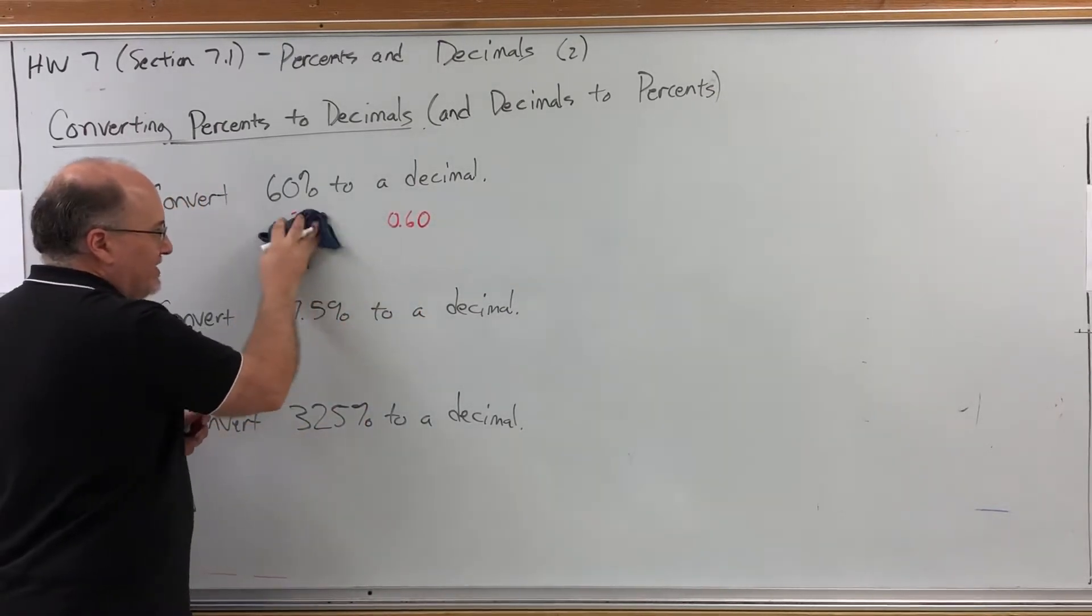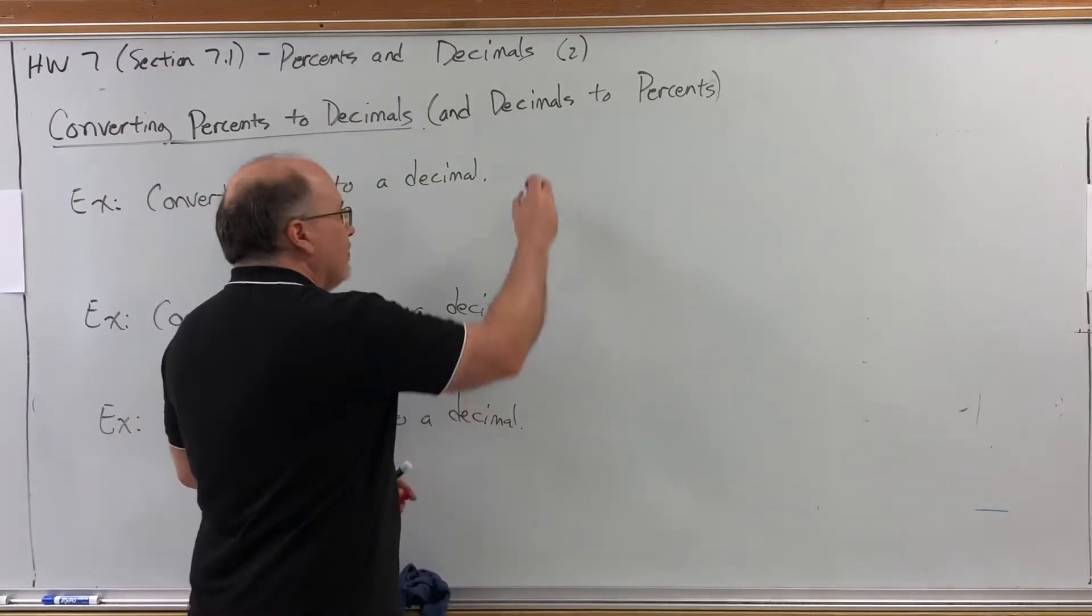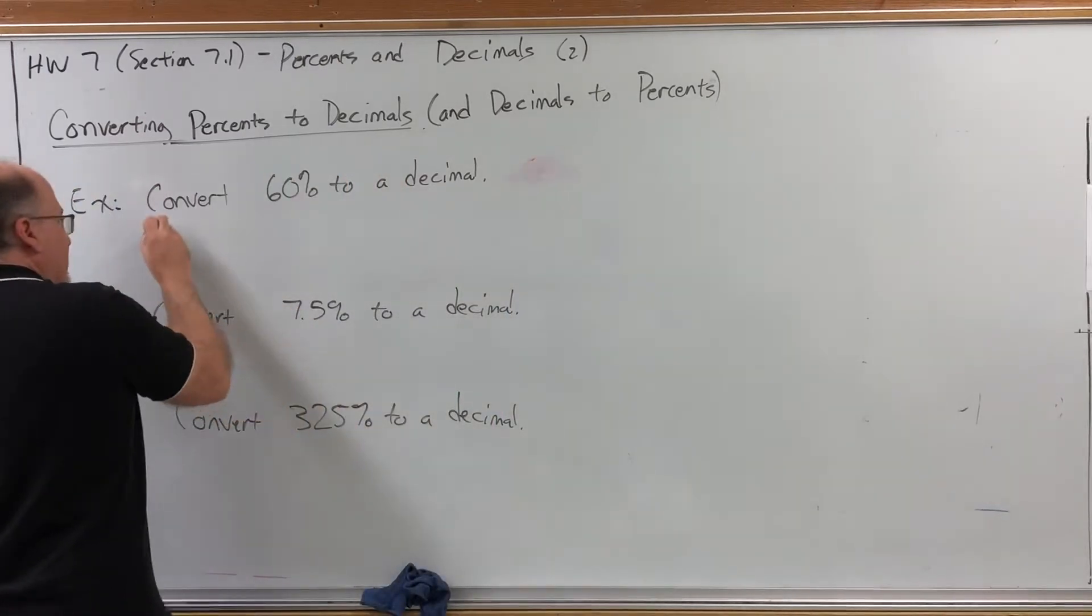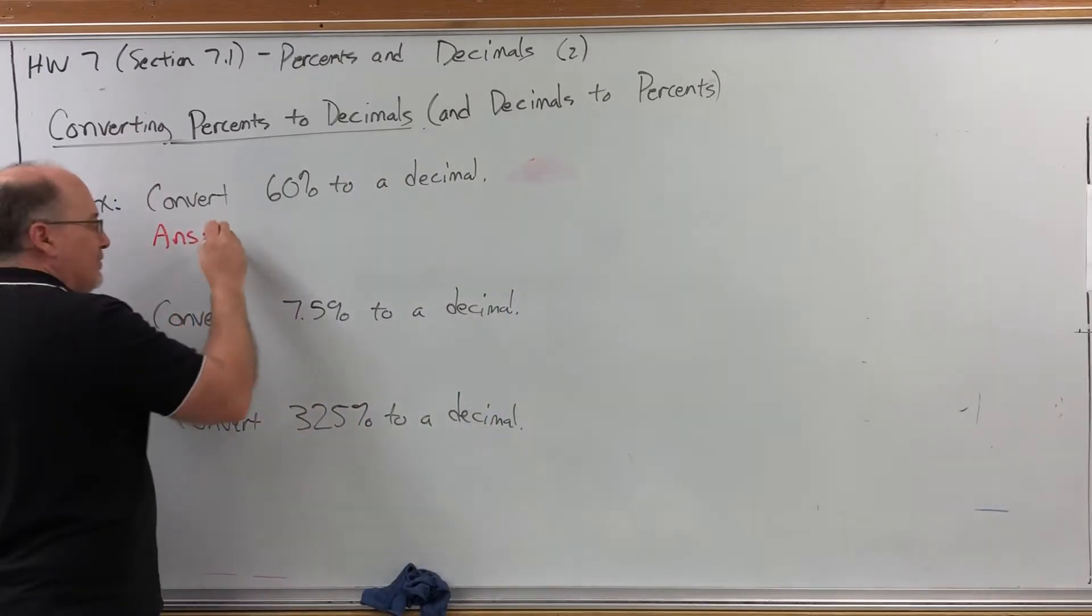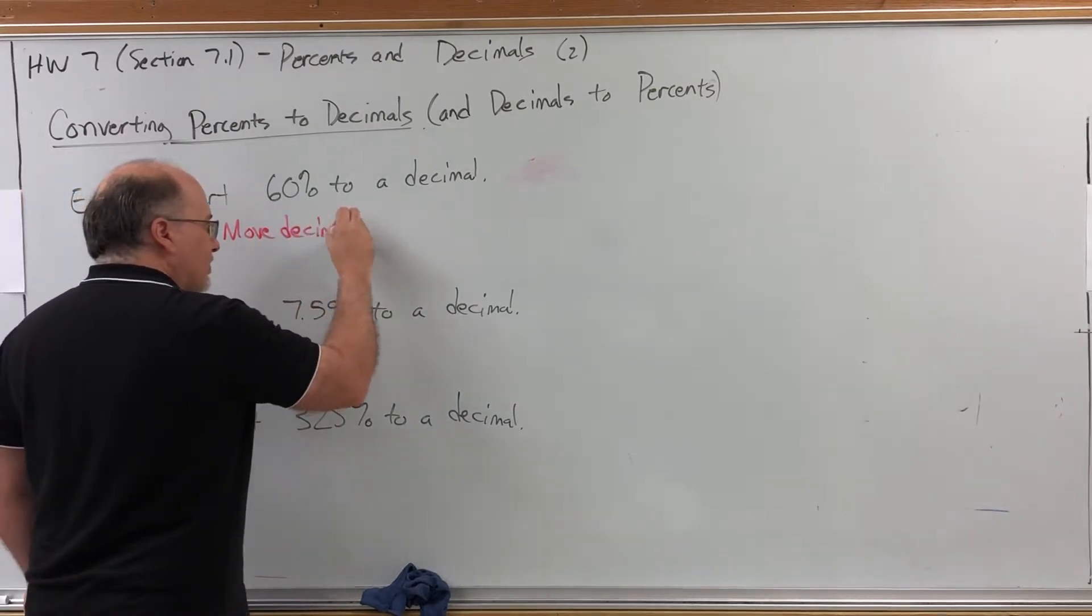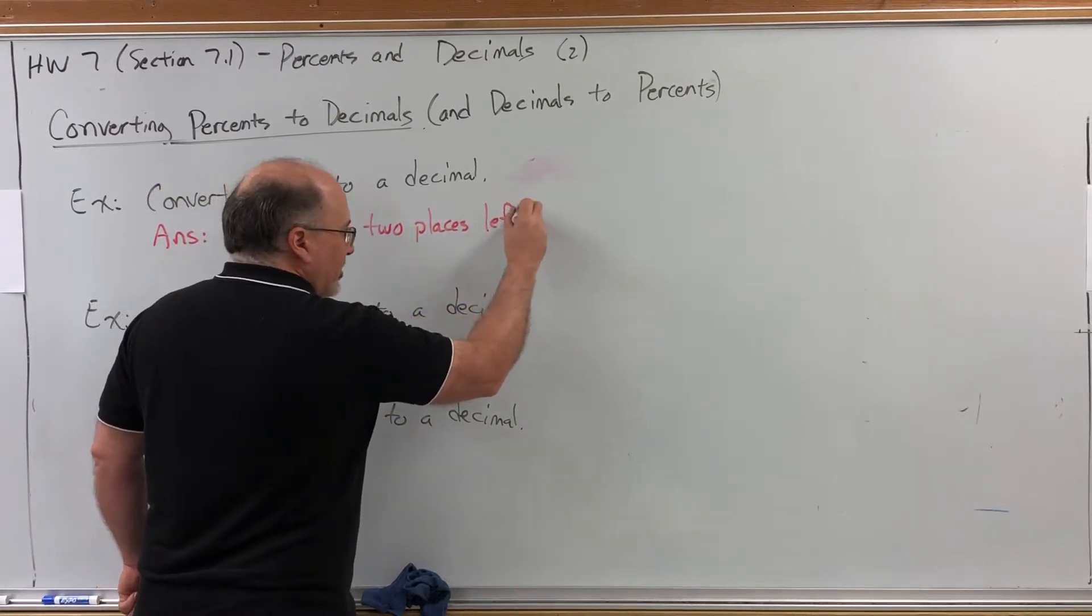So effectively, the decimal moved two places to the left. So in order to convert a percent to a decimal, you just move the decimal two places left and drop the percent sign.